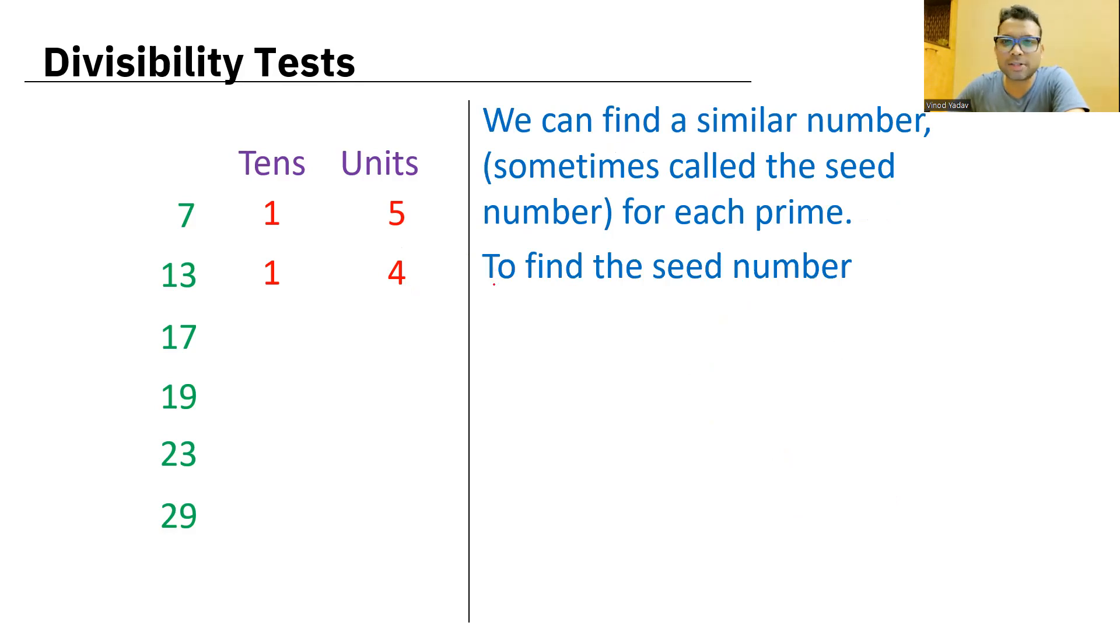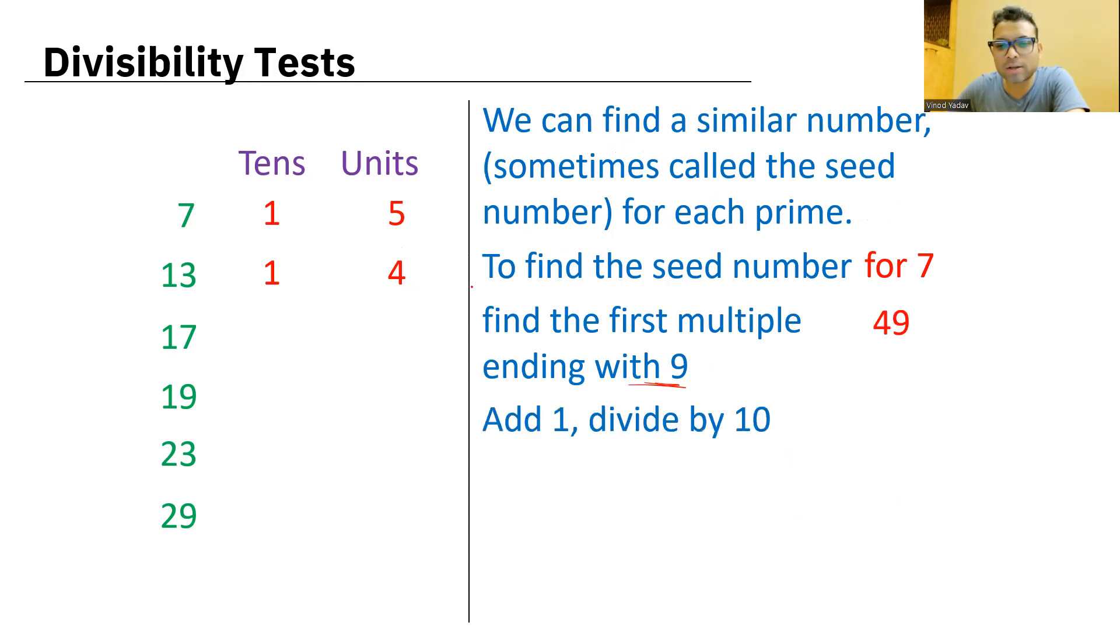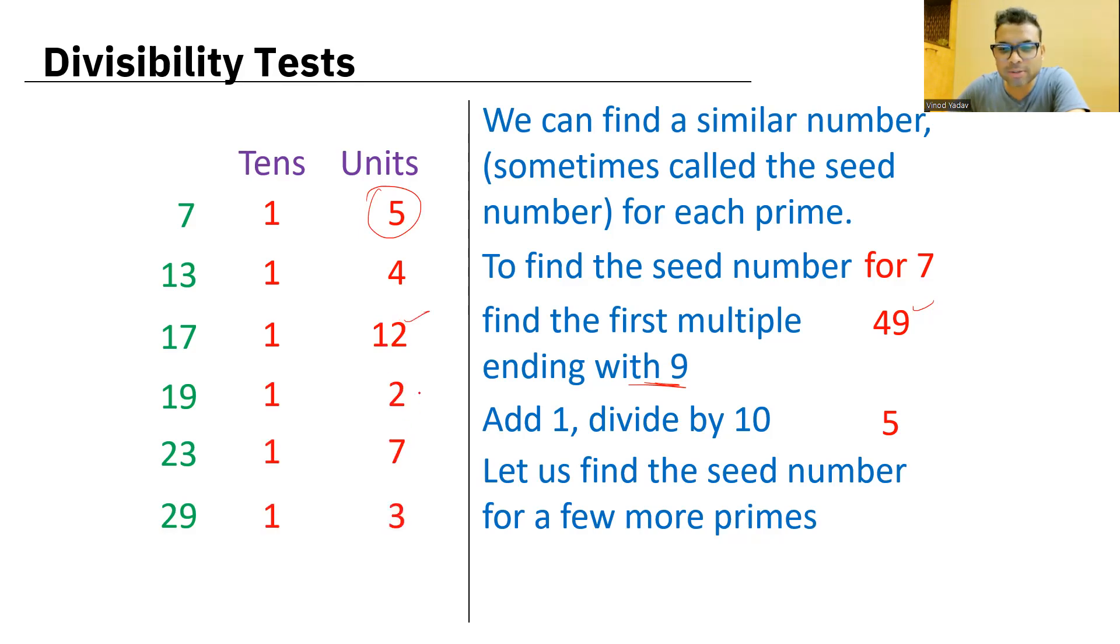For example, to find how do we find seed number? Let's see. For 7, I want to find the first multiple ending with 9. So in case of 7, the first multiple ending with 9 is 49. Add 1 and then divide by 10. 49, if I add 1, I'll get 50 divided by 10, which is 5. So did you see that seed number is 5? For 17, if you do the same logic, first multiple ending in 9, 17 sevens are 119. Add 1, 120 divided by 10, 12. Same way, I'm sure you will find the seed numbers for remaining three.